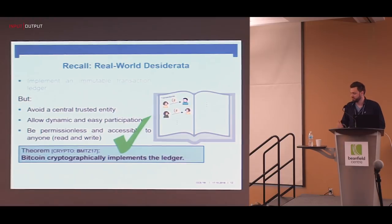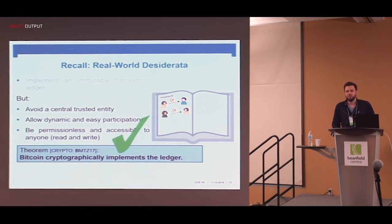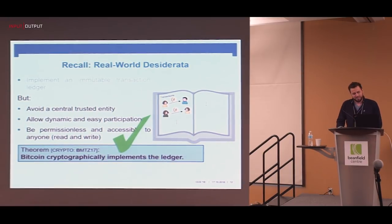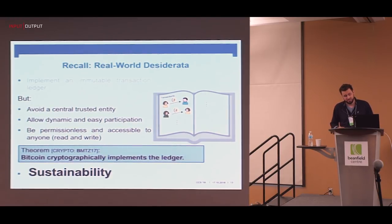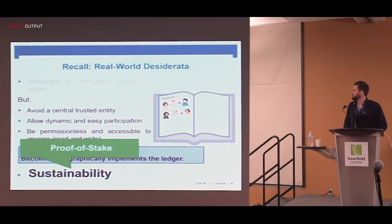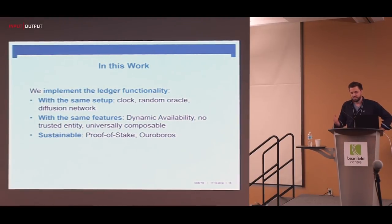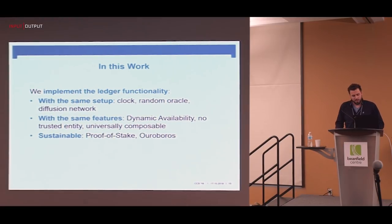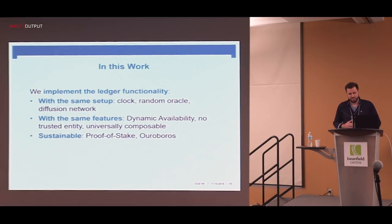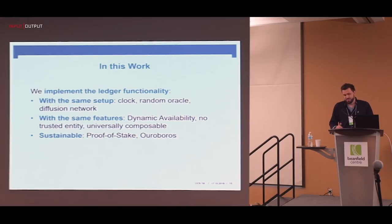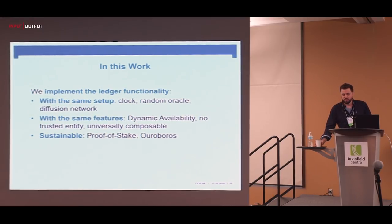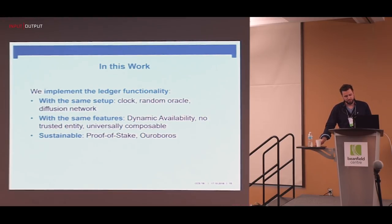Why aren't we done? Well, maybe we don't want a protocol that requires as much electrical power as the country of Ireland or Denmark. Sustainability is a big issue — maybe we can achieve the same but with less resource intensity. This is exactly where proof-of-stake comes into play. In this work we show that we implement the ledger functionality with exactly the same natural setup and the same features — dynamic availability, no trusted entity, universally composable guarantees — and we're sustainable, building on top of Ouroboros, in particular Ouroboros Praos.